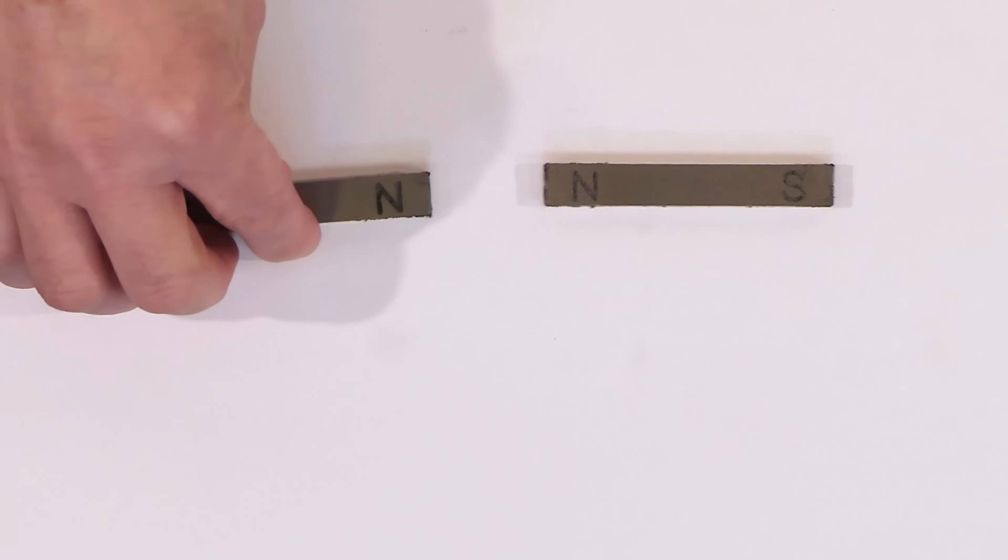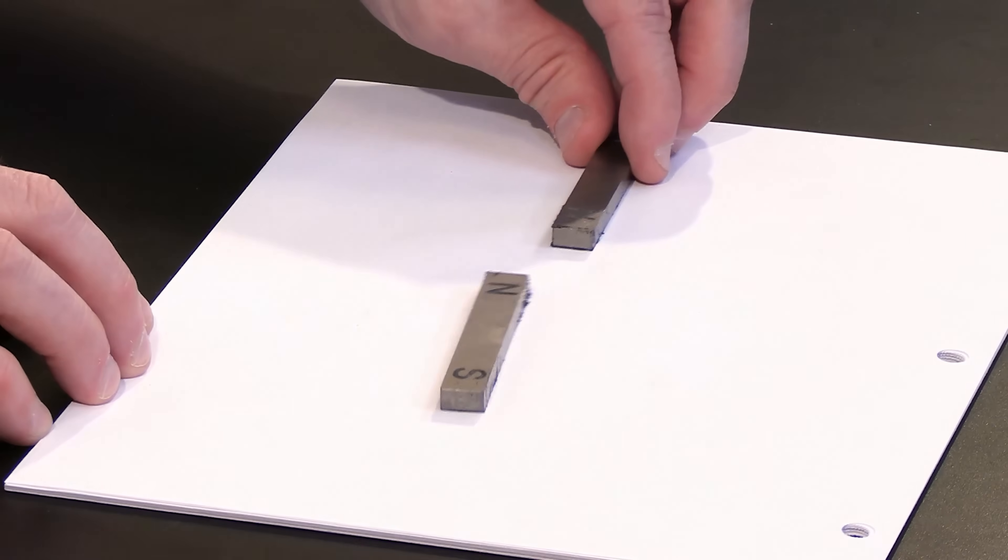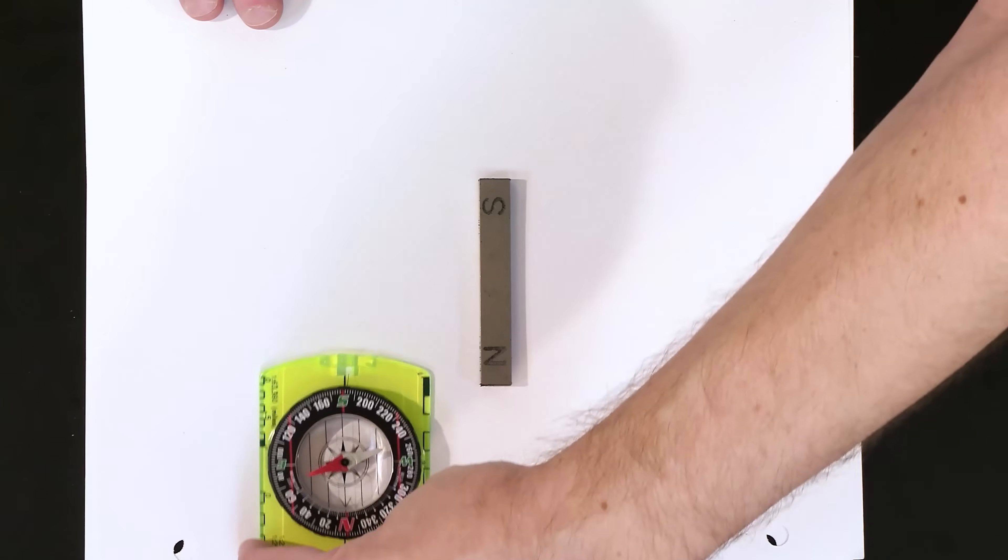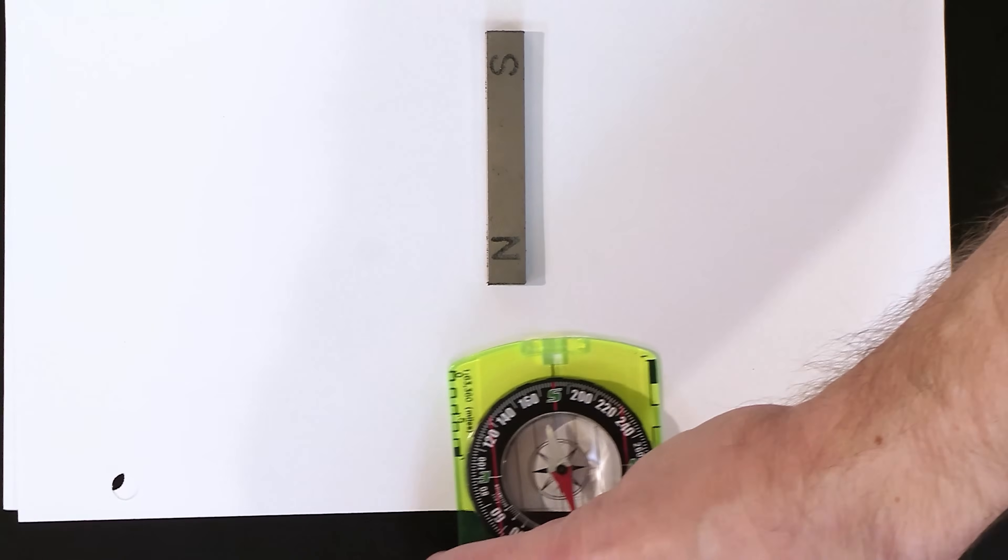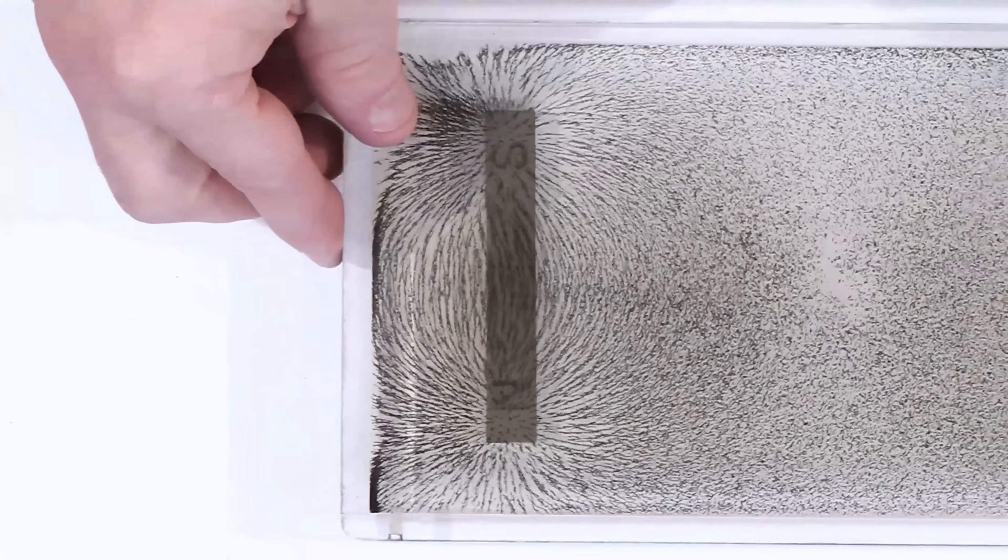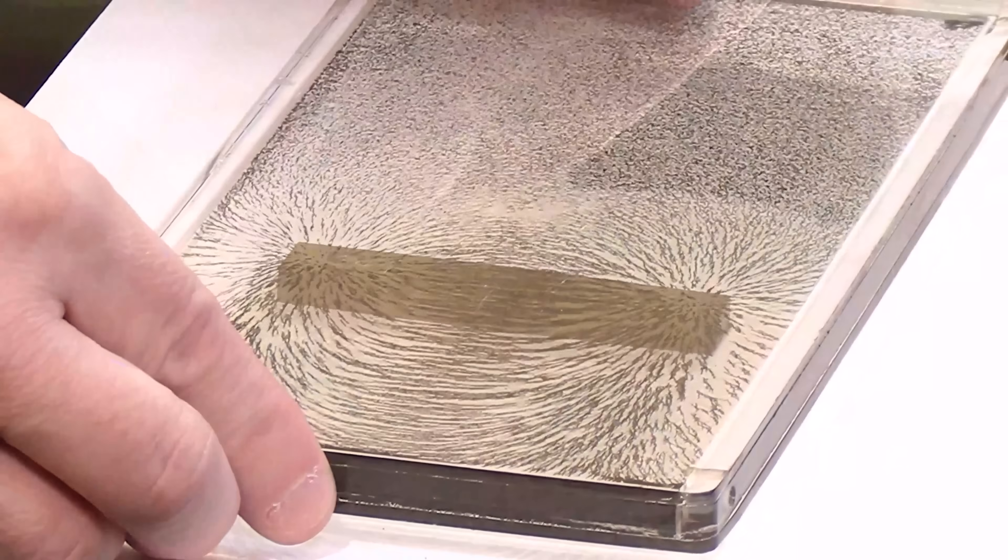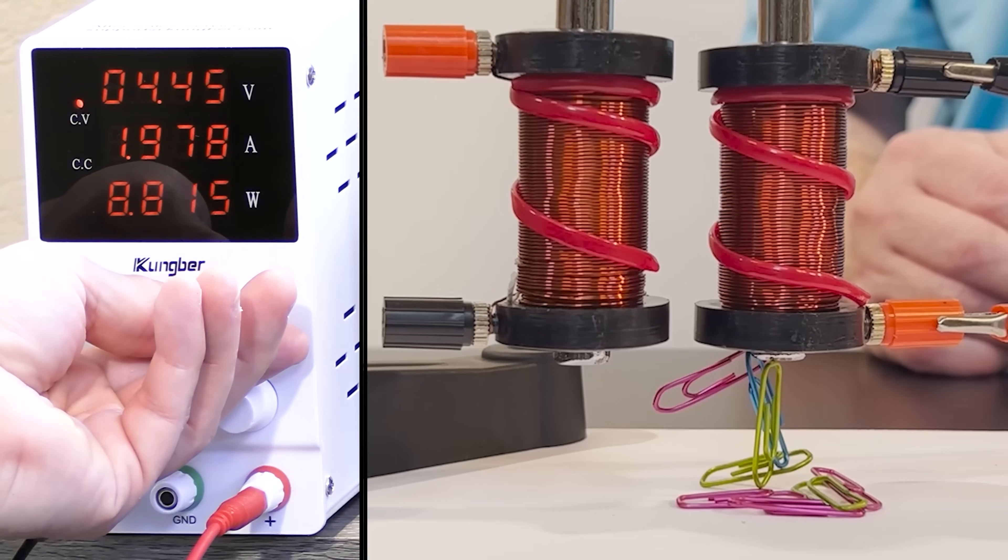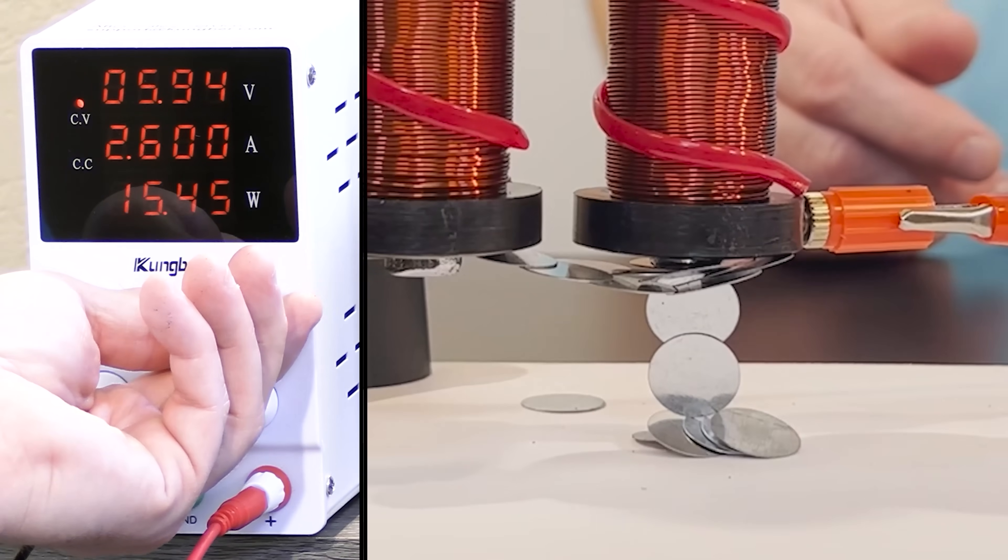What if you could actually see the invisible? We all know that magnets create an invisible field around them, but have you ever actually watched a magnetic field in action? Well today we're going to reveal the magnetic field of permanent magnets in a way you've probably never seen before, in ultra slow motion at thousands of frames per second.